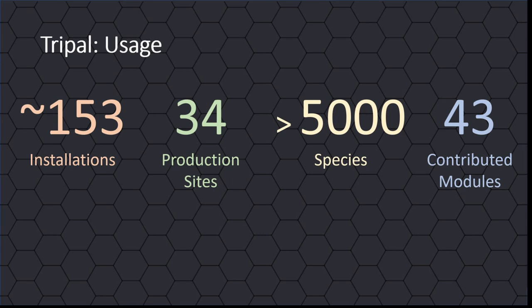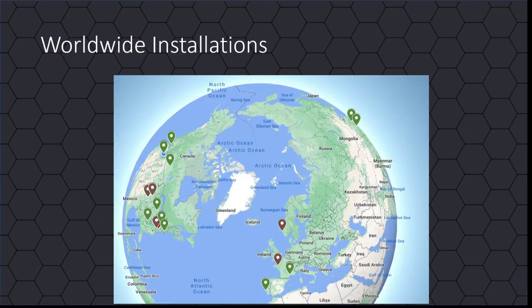In summary, TRIPLE is an actively used toolkit with 153 active installations worldwide, 34 production-level sites, collectively houses data from over 5,000 species, and has 43 contributed extension modules created and shared by non-core developers. TRIPLE sites are hosted worldwide; green pins are plant-based sites, brown pins are animal-based sites, and some locations house more than one TRIPLE site.